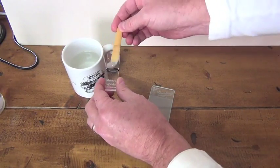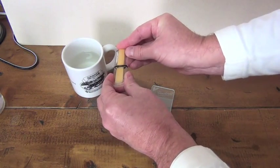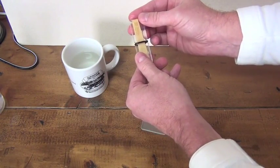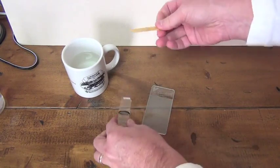Wet the reed again and place the reed on the reed plaque once again to check for flatness. Continue this process until the reed back is flat.